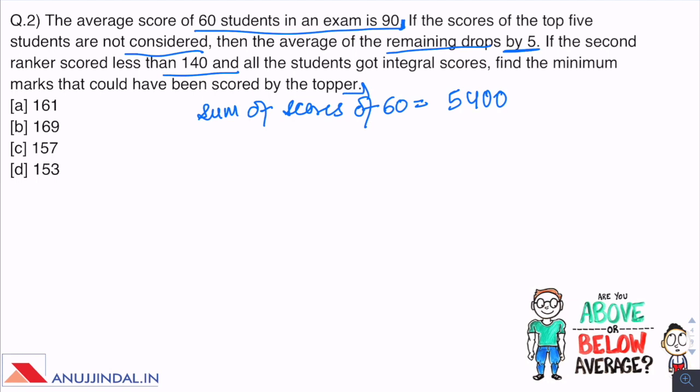In the next line, it is said that if the top 5 students are not considered, then average marks decreases by 5. So 55 into 85, because the average marks earlier were 90, equals 4675 marks. If we subtract this from 5400, we will get the marks of these 5 students who topped the exam. This comes out to be 725.